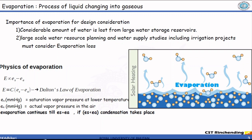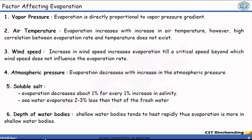If the saturation vapor pressure is less than the actual vapor pressure, then condensation will take place. Let's understand the factors that affect evaporation. As we have already studied, the first factor is vapor pressure — evaporation is directly proportional to the vapor pressure gradient, that is, the difference in saturation vapor pressure and actual vapor pressure.